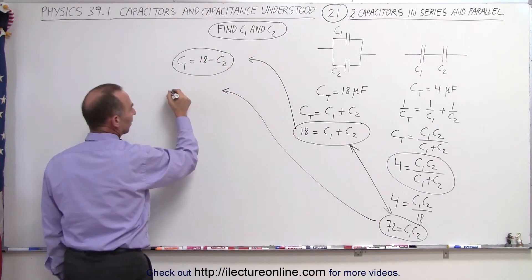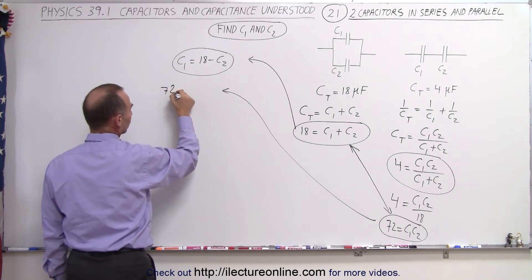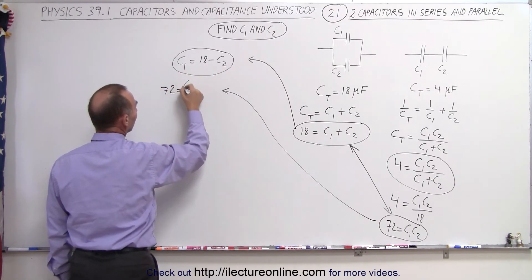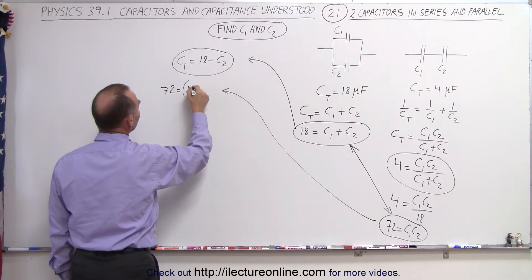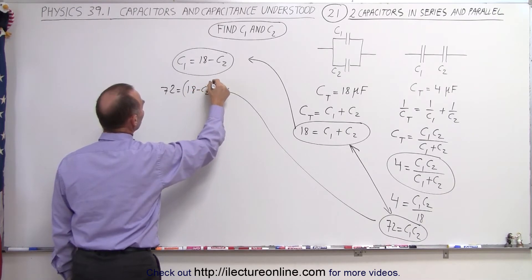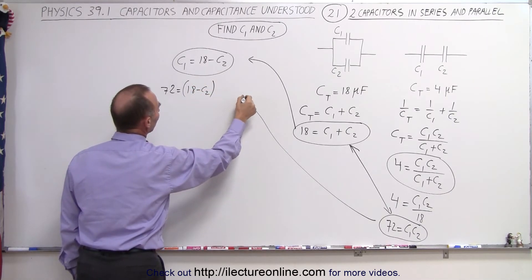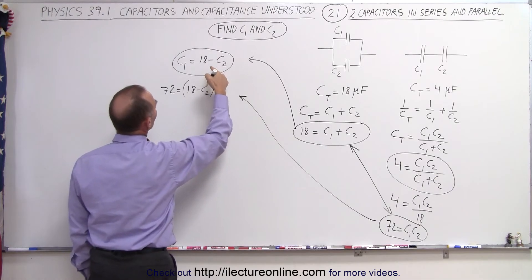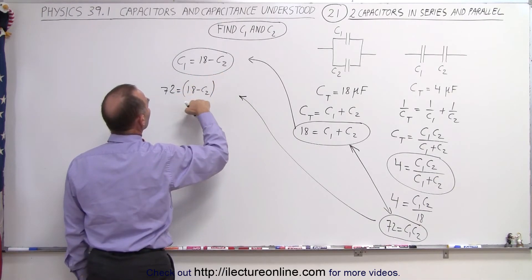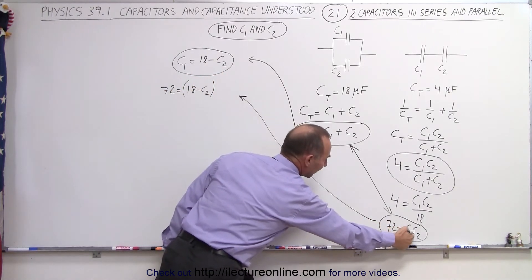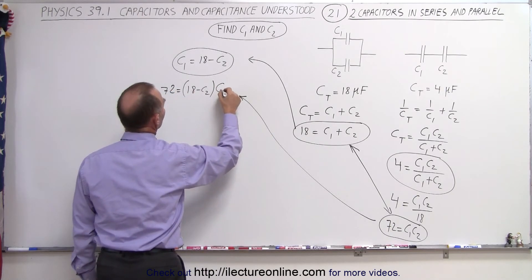So that means that now we have 72 is equal to C1, but instead of writing C1, we're going to write 18 minus C2, make the arrow a little smaller right there, times C2, like that.